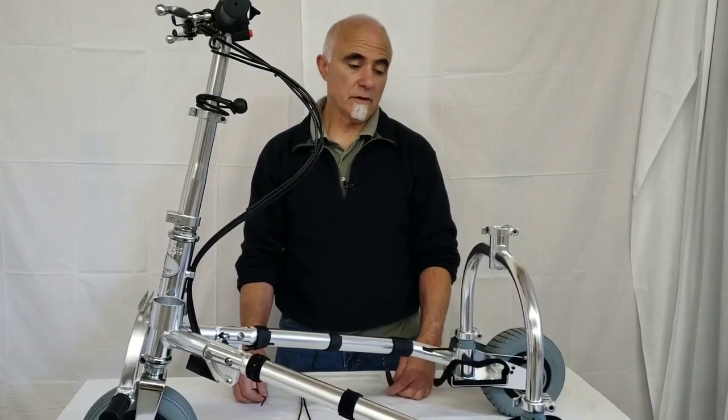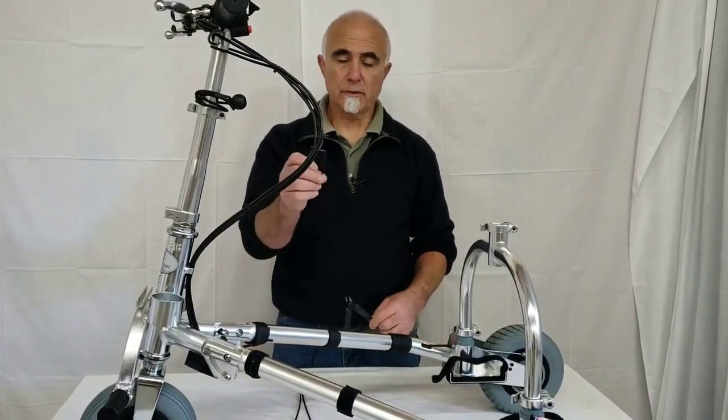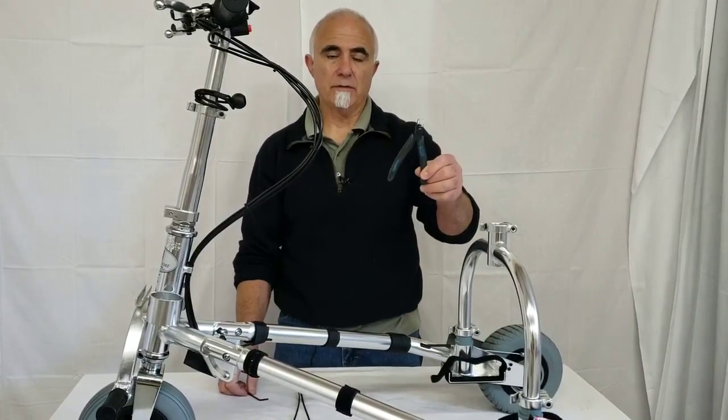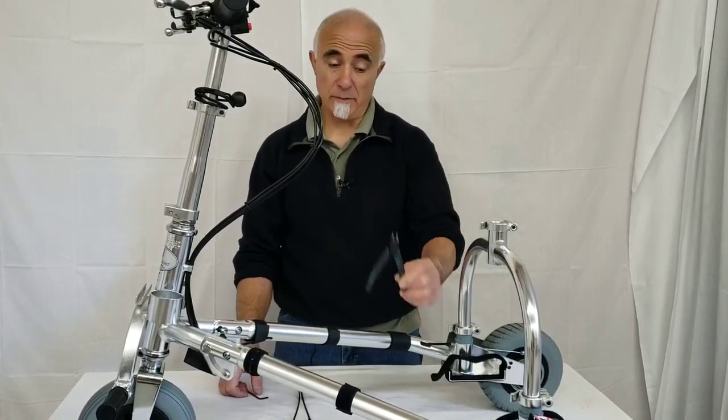To remove and replace the controller, you're going to need the following tools: the 3mm Allen wrench from your tool kit and a small pair of wire cutters to cut the tie wraps, not the wires.